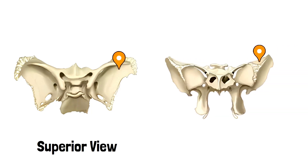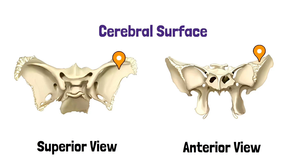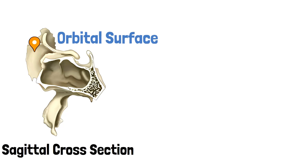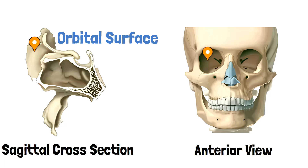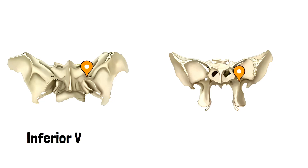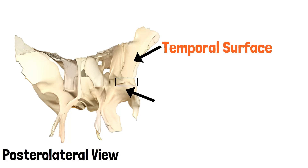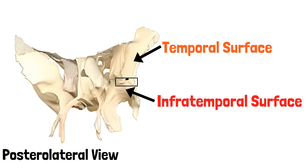Let's have a look. This is the superior and anterior view of the bone. This marked area is the cerebral surface. This is the sagittal cross section of the bone, and this marked surface is the orbital surface — this is how the orbital surface forms the lateral wall of the orbit. This is the inferior and anterior view of the bone; this marked surface is the maxillary surface, directed towards the maxilla. This is the posterior lateral view; this surface is the temporal surface. The surface below the rectangle is the infratemporal surface — yes, that rectangle is the infratemporal crest.